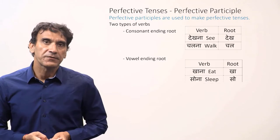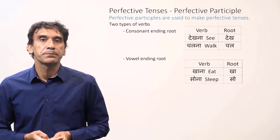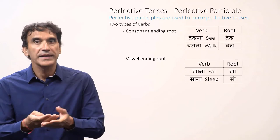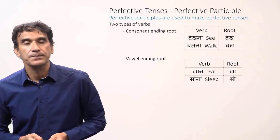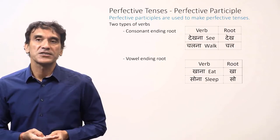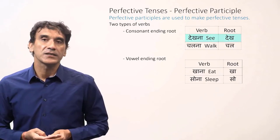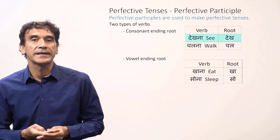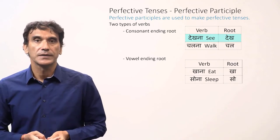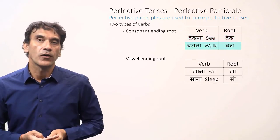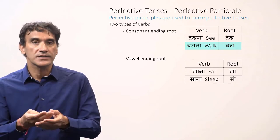We have been making a distinction between the consonant ending roots and the vowel ending roots in some previous grammar points, mainly in the imperative and also in the future tense. We'll make the same distinction here again. The verb dekhna, to see, is a verb with a consonant ending root — dekh is the verb root. Similarly, chalna, to walk, also has the consonant ending root — chal is the consonant ending root.